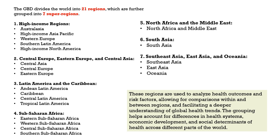What are these seven super regions? The GBD basically divides the world into 21 regions, and these 21 regions are grouped into seven super regions. The first is high income regions, which includes Australasia, high income Asia-Pacific such as Japan, Western Europe, Southern Latin America and high income North America including Canada. The second is Central Europe, Eastern Europe and Central Asia, which includes Central Asia, Central Europe and Eastern Europe.